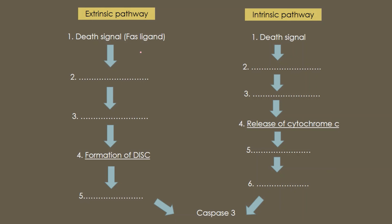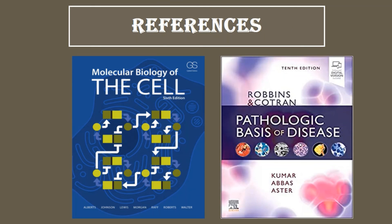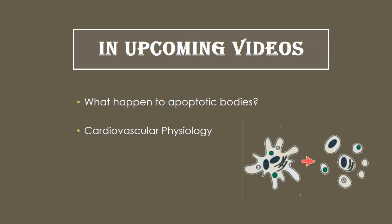This is an assignment for all of you: fill in the blanks for both pathways and write your answers in the comments section. These are the references you can look up for the same topic. In the upcoming videos we will talk about what happens to apoptotic bodies, and we will also start a separate series on cardiovascular physiology. Until then, keep learning.